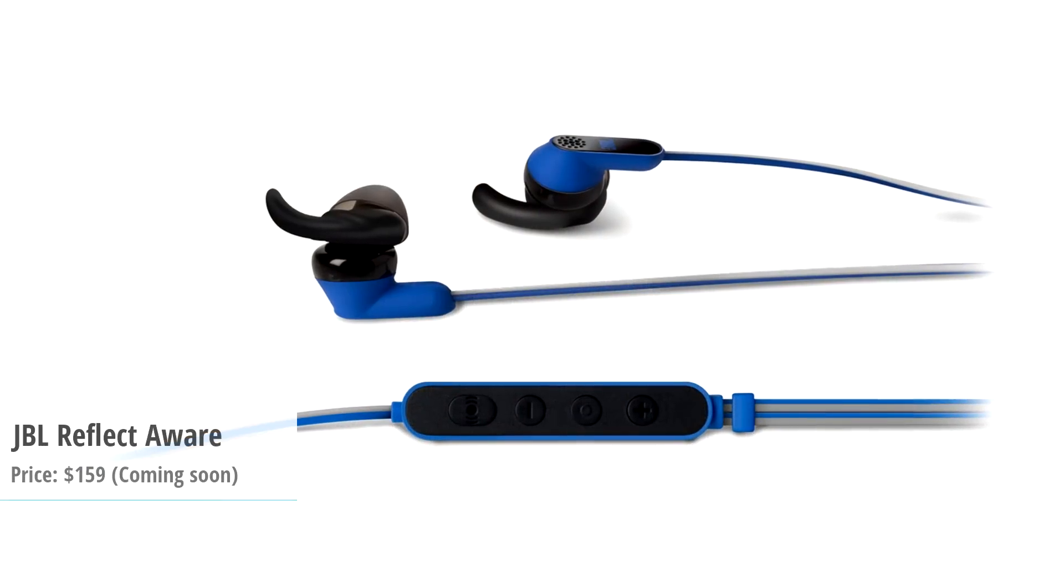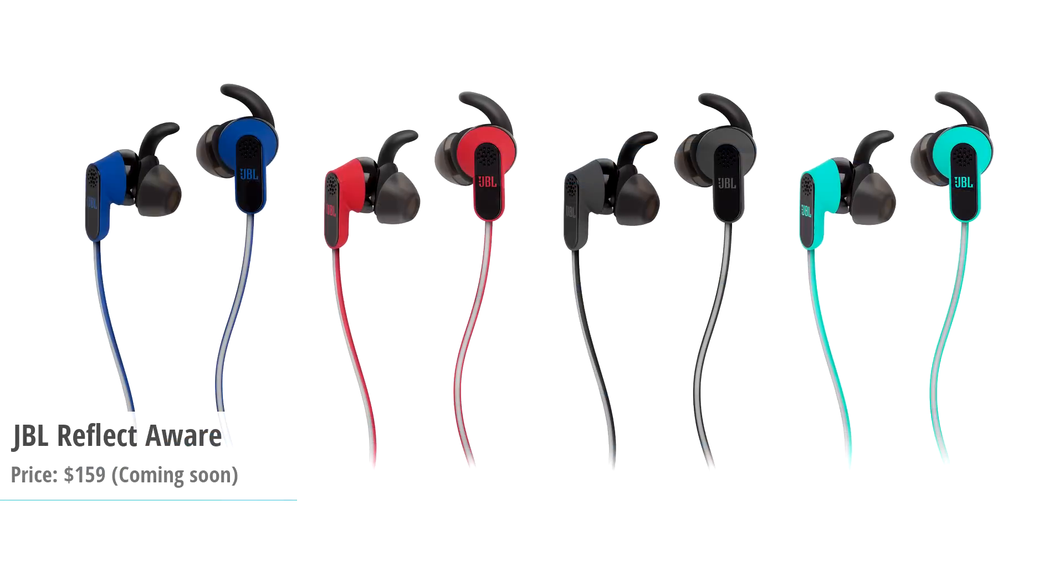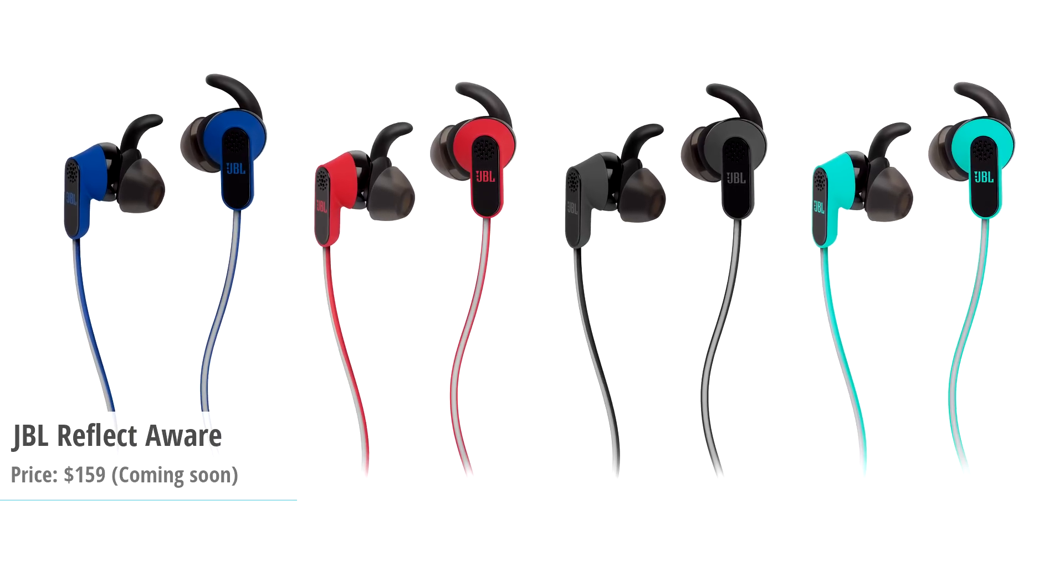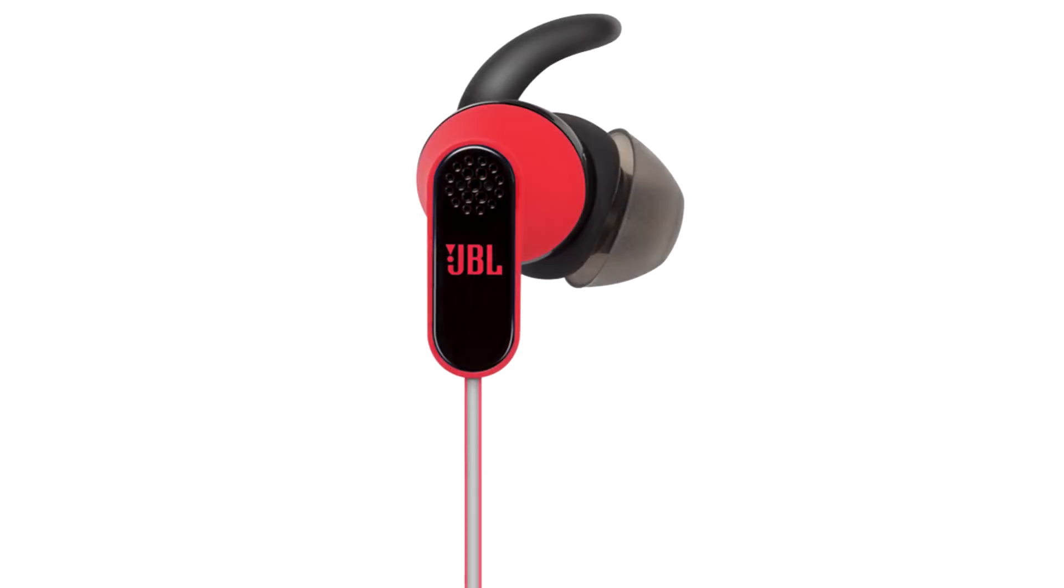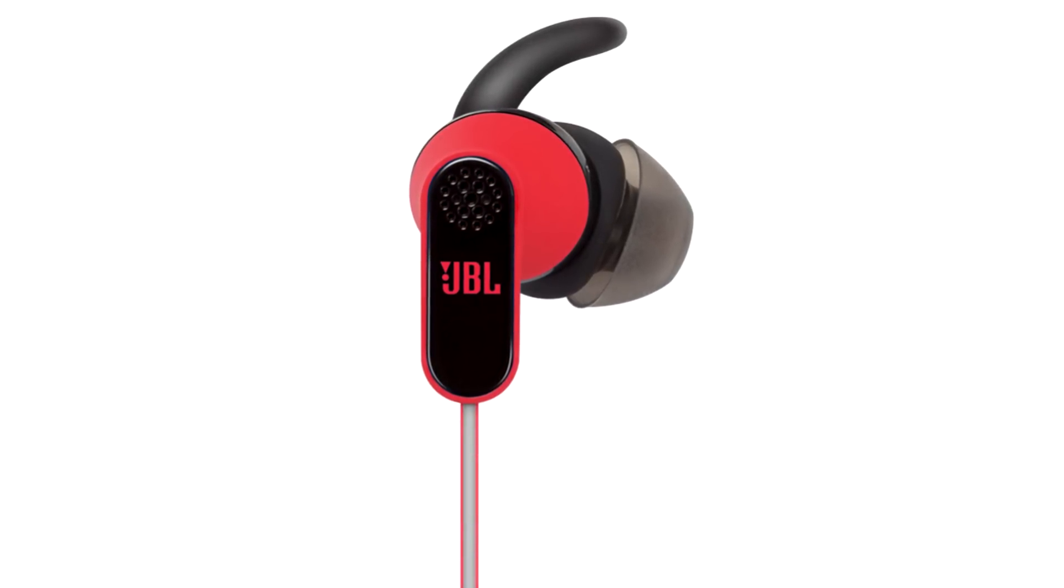For example, this is the JBL Reflect Aware. They're light and sweatproof, which makes them ideal for use while exercising, but the killer feature of these earphones is that they have active noise cancellation. Tiny microphones are used to kill background noise.